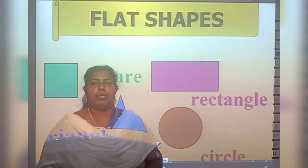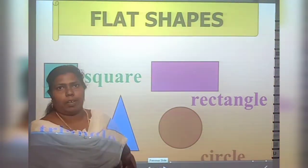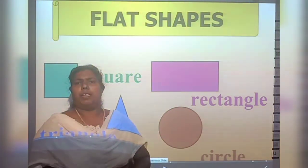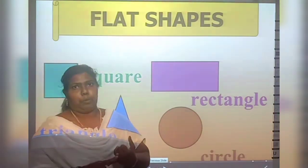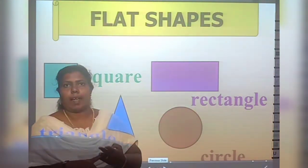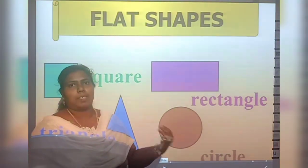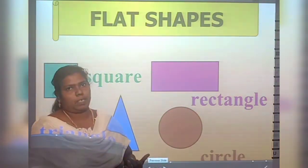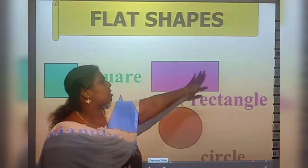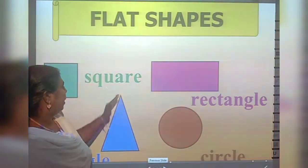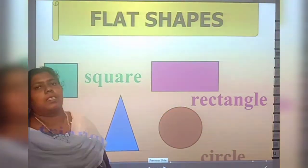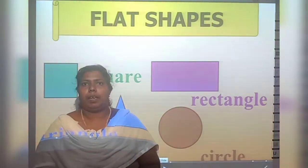Today we are going to discuss about solid shapes. Solid shapes include cube, cuboid, cylinder, and cone. These flat shapes are different — now we are going to discuss about solid shapes.